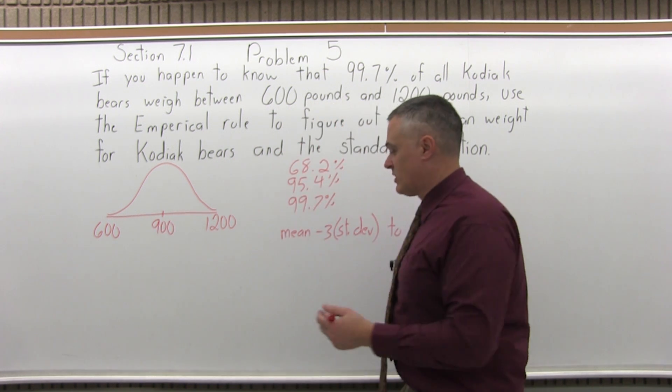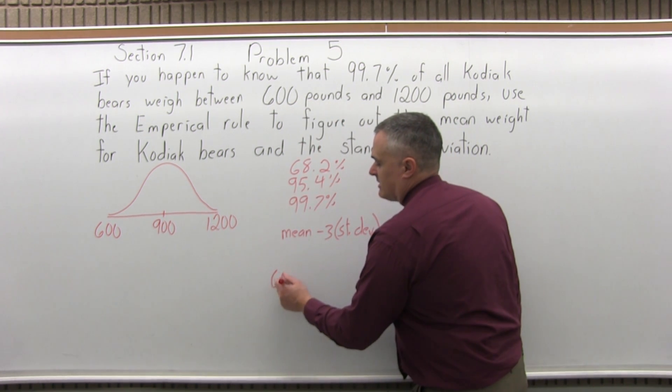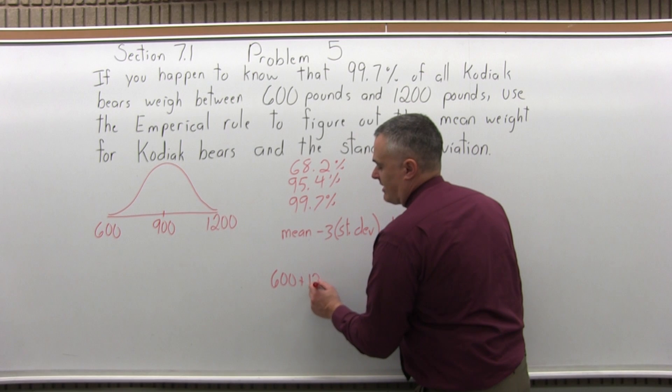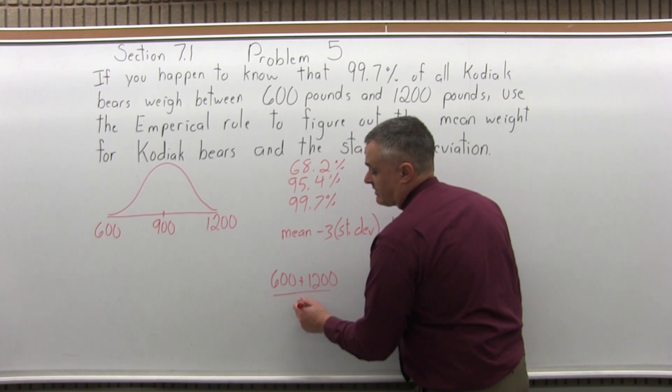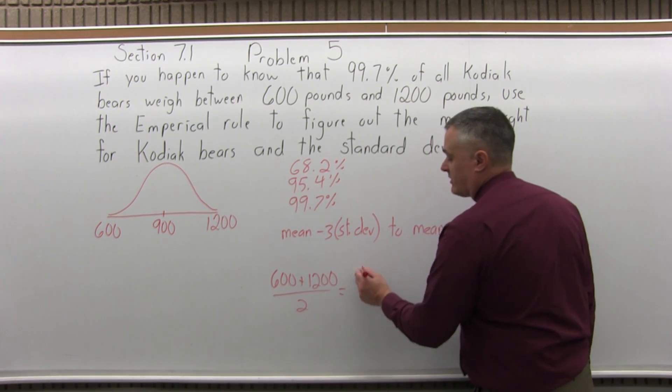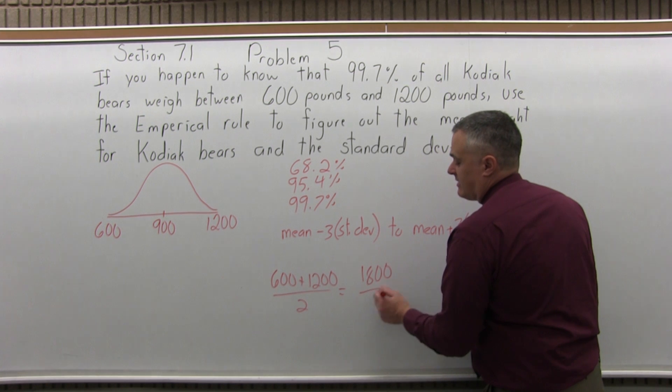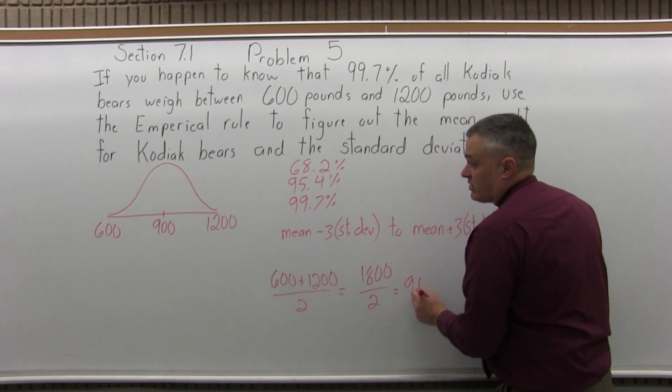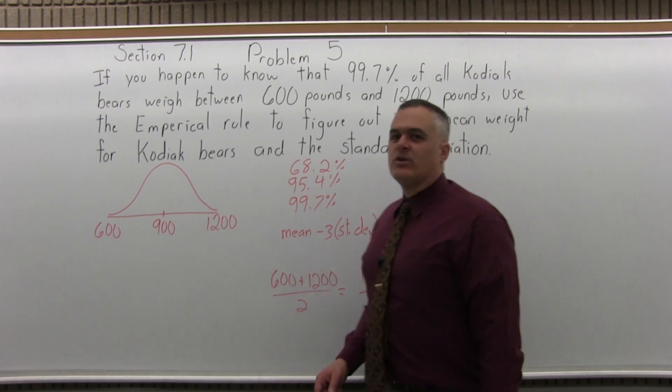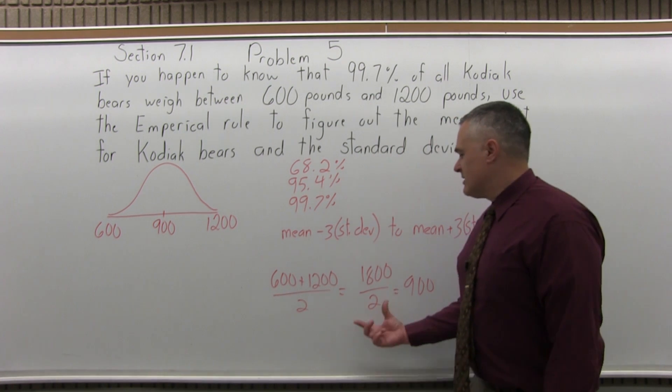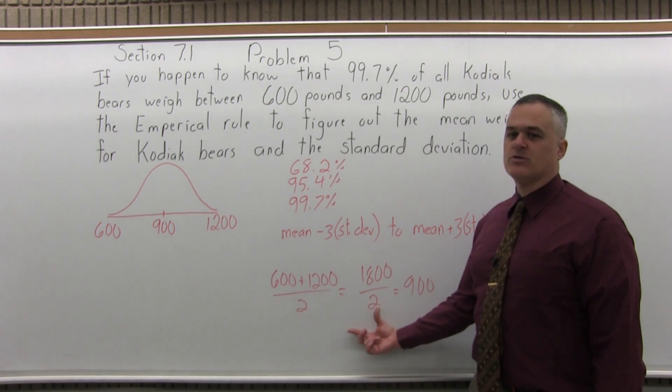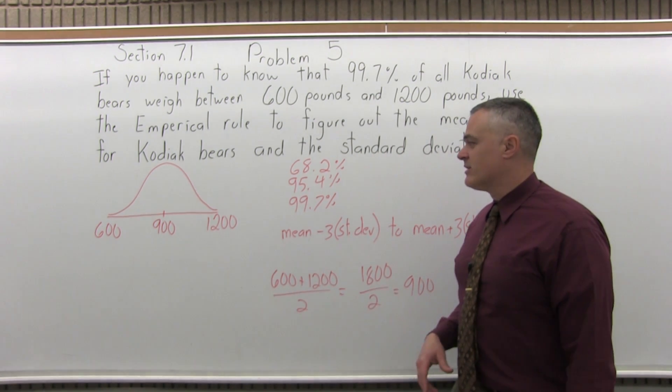Let's say you don't see it easily. What you would do is take the low end and add it to the high end and divide by two. You're finding the average. So 600 plus 1200 is 1800. 1800 divided by two is 900. It's a very small amount of work to just do the computation, especially with a calculator.